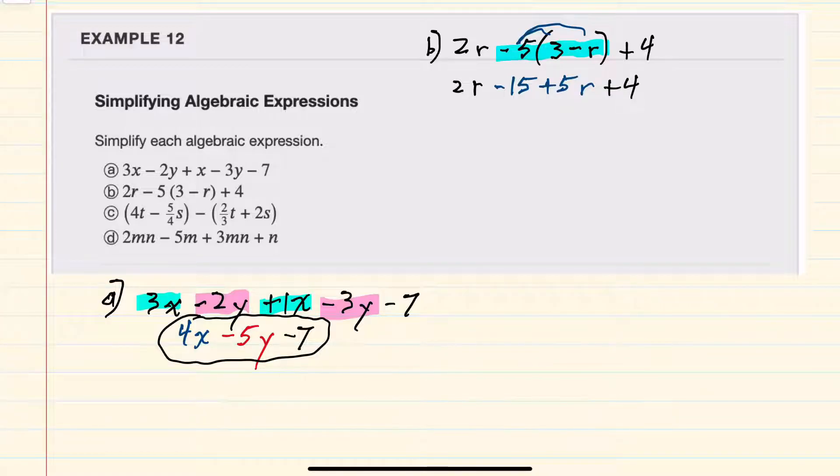In our first step, we've removed the parentheses. Now I can look for like terms to add. And the 2r and the plus 5r are like terms. Those can be added to be 7r. The minus 5 and plus 4 are also like terms. Those can be combined as a minus 11. So this is our simplified B expression.